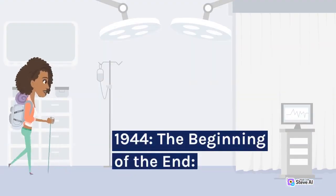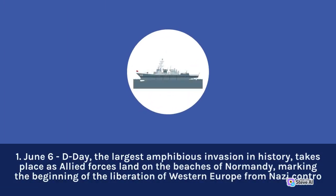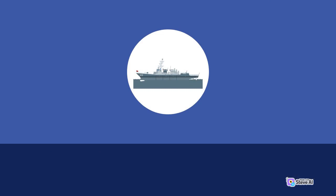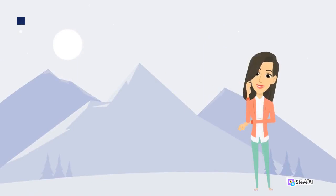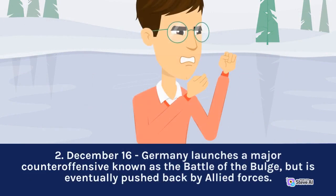1944 — The Beginning of the End: June 6, D-Day — the largest amphibious invasion in history — takes place as Allied forces land on the beaches of Normandy, marking the beginning of the liberation of Western Europe from Nazi control. December 16, Germany launches a major counter-offensive known as the Battle of the Bulge, but is eventually pushed back by Allied forces.